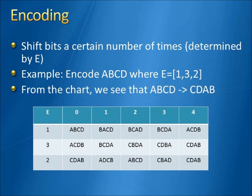The encoding algorithm is going to be a simple rearrangement of the bits in the string, and we're going to do this using a key. For a key of length n, we are going to carry out n rotation operations, each with a magnitude associated with the value at that point in the key. In the example given, the key has a length of 3, and we first rotate with a magnitude of 1, then with a magnitude of 3, and lastly with a magnitude of 2. The end result gets us CDAB from ABCD.